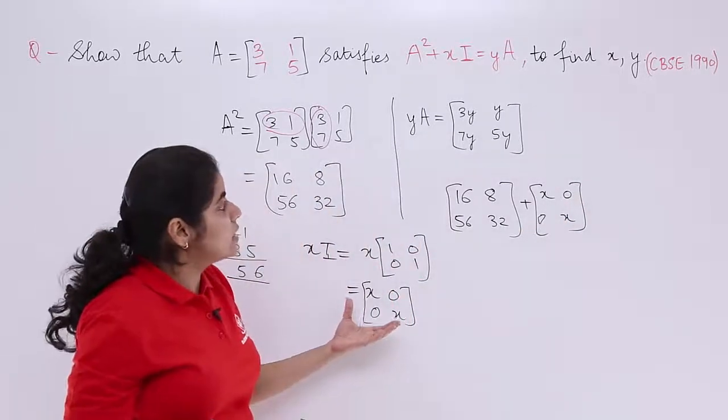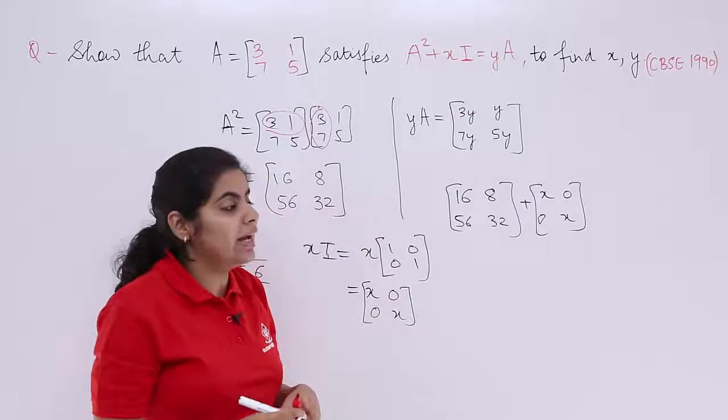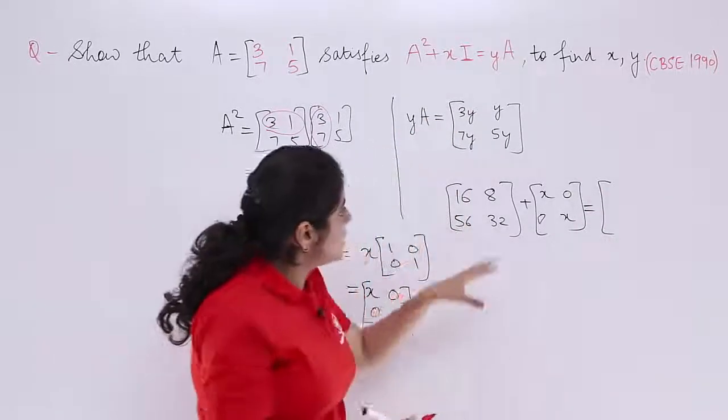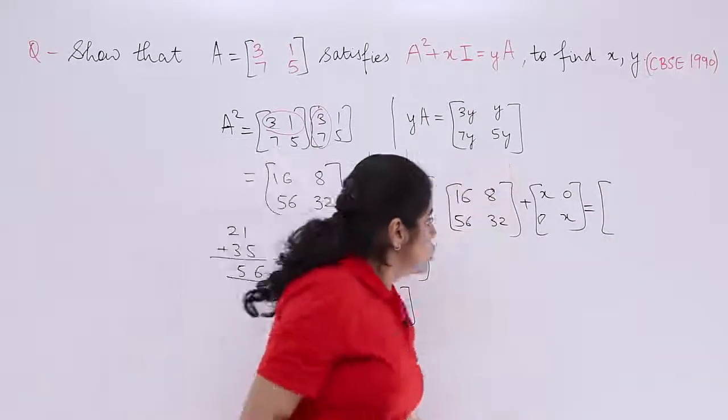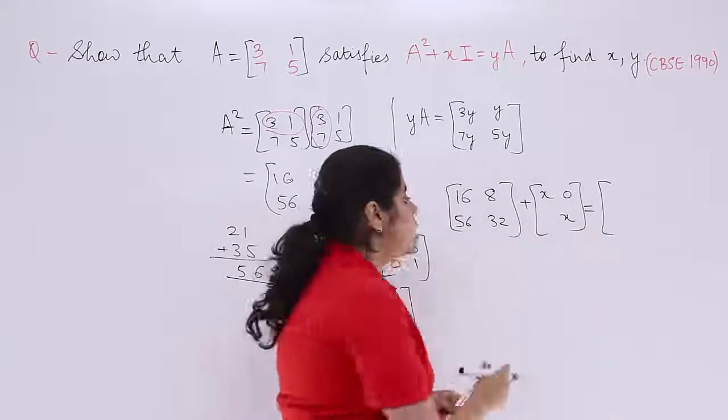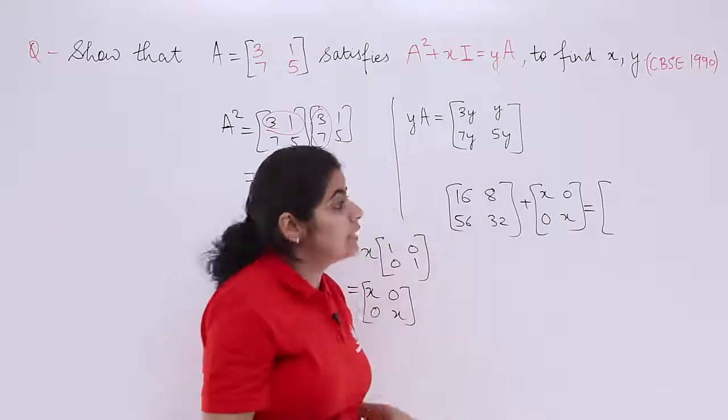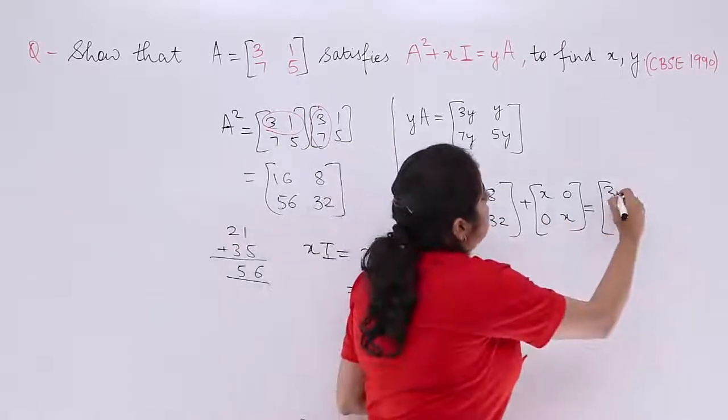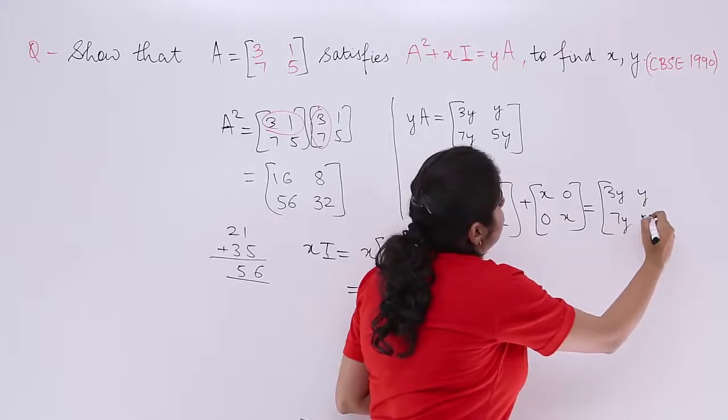Next what you have is, next you have is equal to YA. So it is equal to YA. Where is YA? YA is here. So first, let's make this more specific and clear. It is 0 and here it is YA. So it is 3Y, Y, 7Y, 5Y.